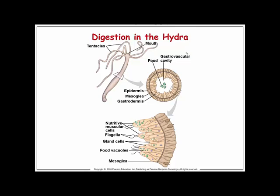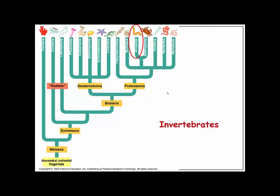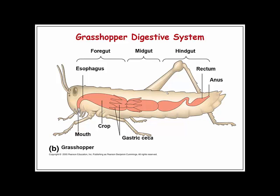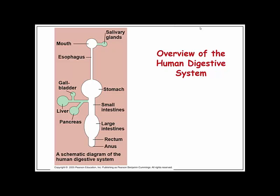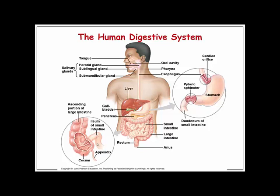Invertebrates are a little different — with a gastrovascular cavity, food is exposed to almost all the cells, so the organism doesn't need a separate circulatory system; the gastrovascular cavity acts a bit like one. Here's an overview of the human system: the mouth and salivary glands are accessory organs that begin chemical digestion. The esophagus moves food to the stomach where chemical digestion continues. The gallbladder, liver, and pancreas assist absorption in the small intestine, and the large intestine performs secondary fermentation and water absorption.